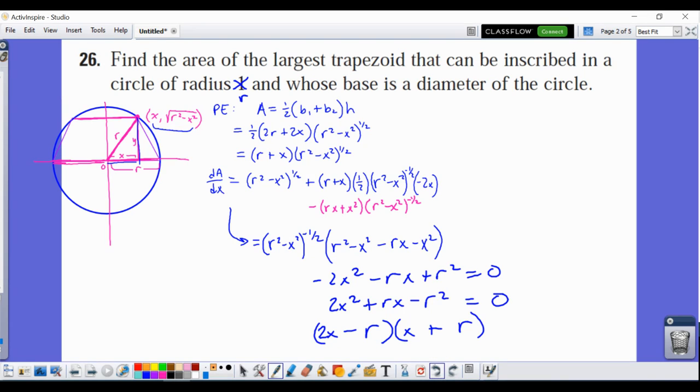Or we can have this one equal zero. And so we get 2x = r, x = 1/2 r.